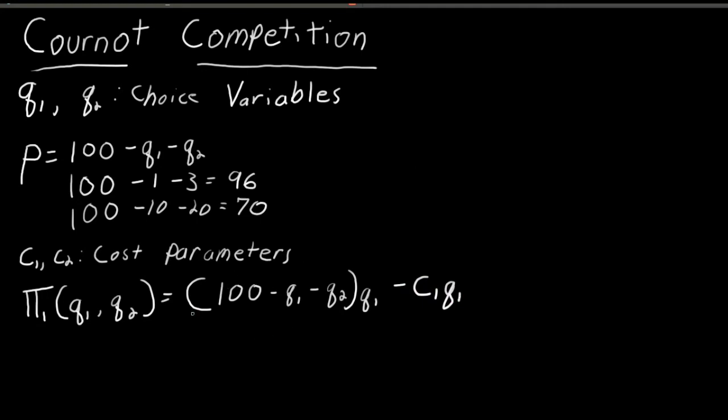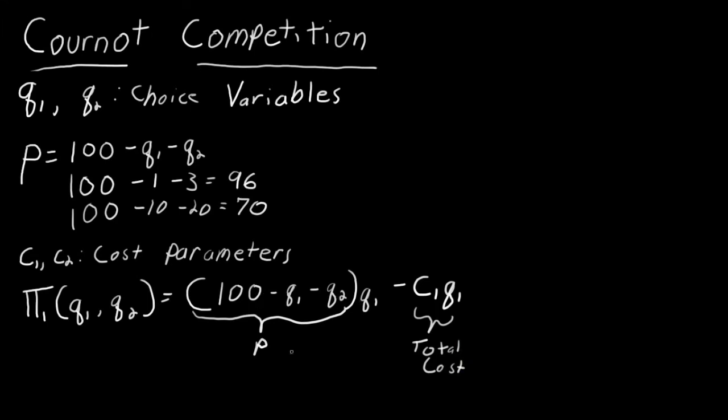Okay, remember, this term is the price. This is the quantity and this is going to represent total cost. So what this says is that a firm's profit is the price times the quantity, which is known as the revenue minus its total cost. And firms would like to maximize this. So firm one is going to maximize this and firm two is going to also maximize his profit function.